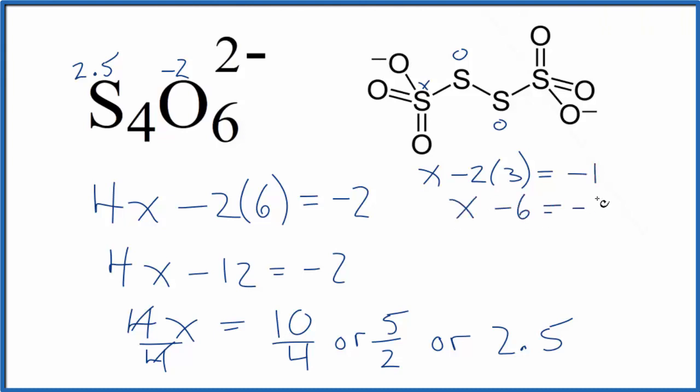X minus six equals minus one. Add five to both sides. X equals a positive five. So this sulfur is going to be plus five. That's its oxidation state. Over here, this is the same thing. It's symmetrical. So this one will be plus five as well.